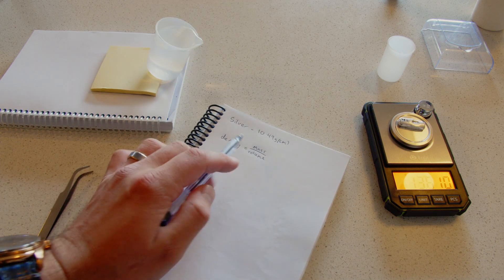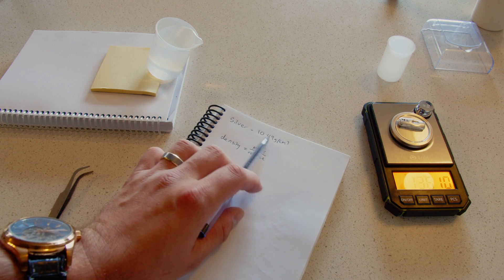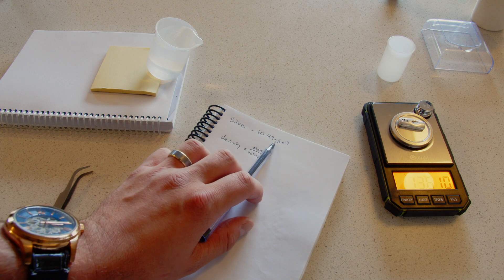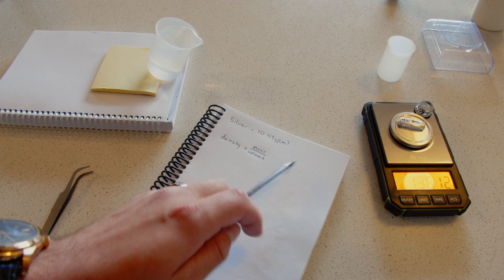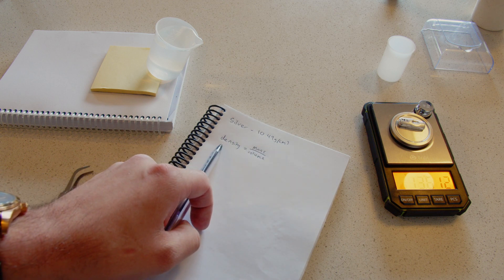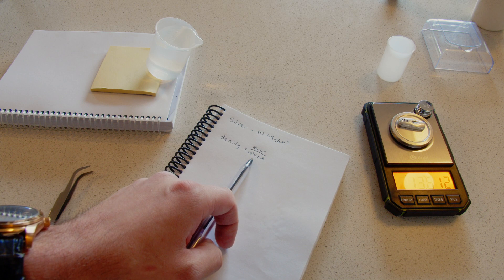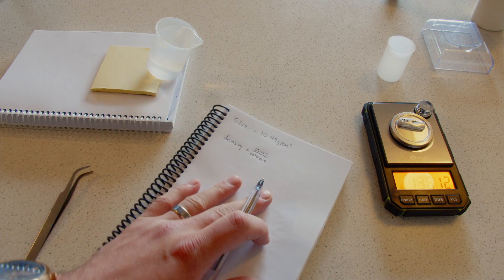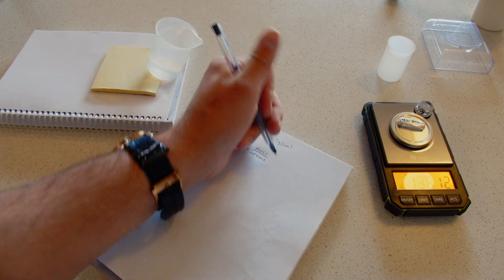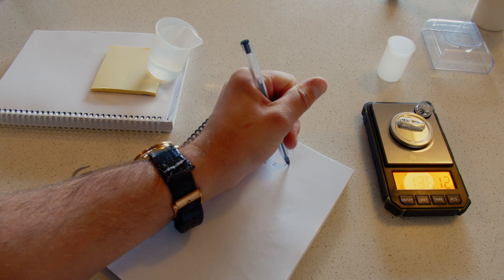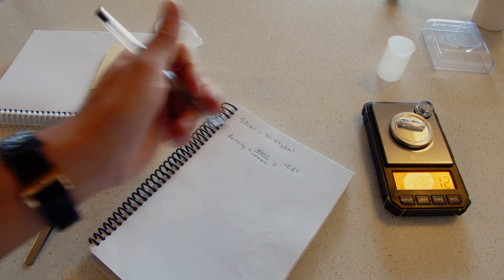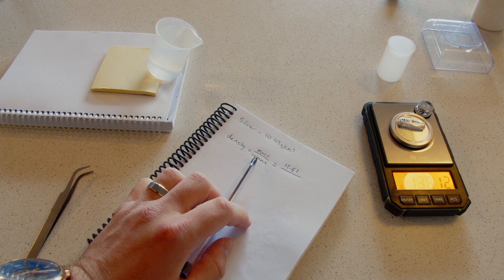First things first, the known density of silver is 10.49 grams per cubic centimeter. The equation is density equals mass over volume. The mass of this is 13.61 grams, working to two decimal places. Now I need to find out the volume.